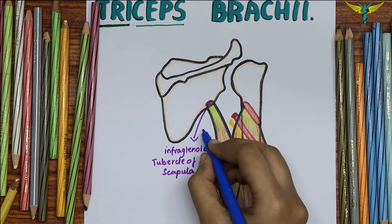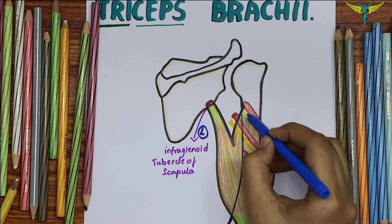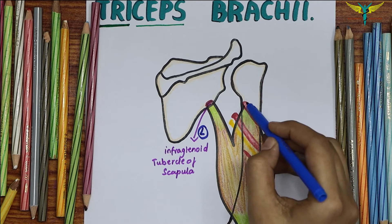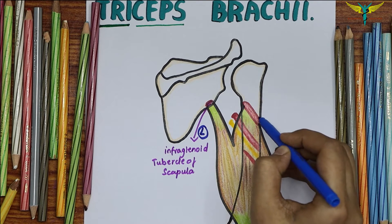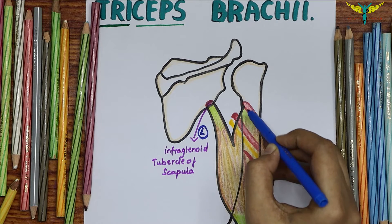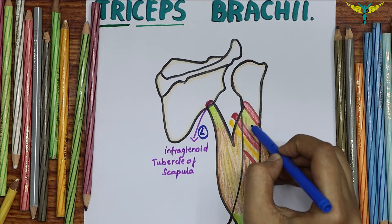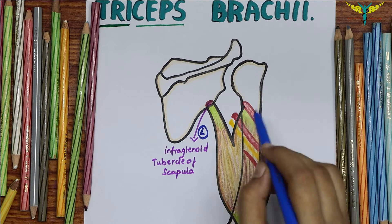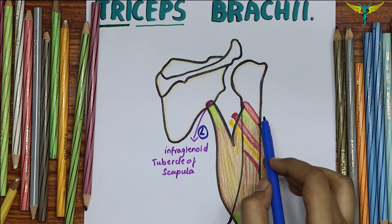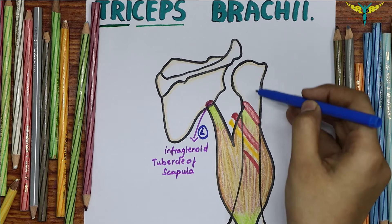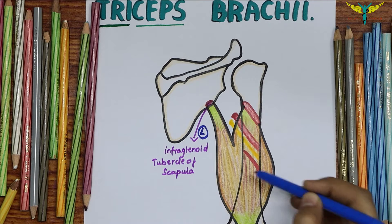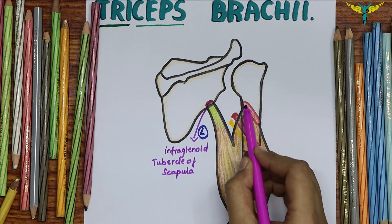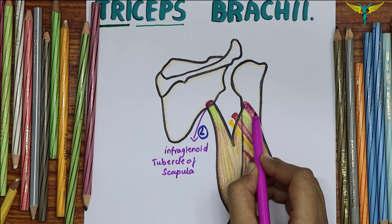The lateral head arises from the oblique ridge, which is above the spiral groove on the upper part of the posterior surface of the shaft of the humerus. This is the origin of the lateral head — the oblique ridge.